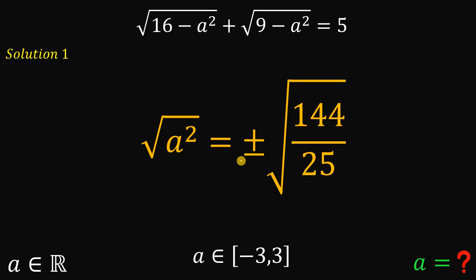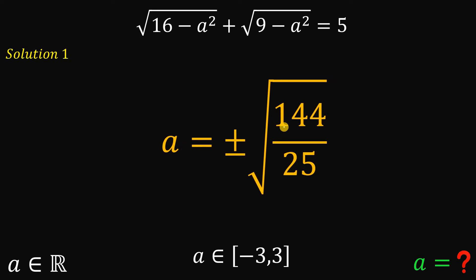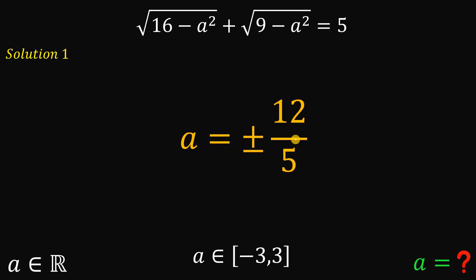Take note, we have two possible values: positive or negative. On the left side, we have A. On the right-hand side, the square root of 144 is 12 and the square root of 25 is 5. So A equals positive or negative 12 over 5. Converting 12 over 5 to decimal gives 2.4, so A equals positive or negative 2.4.